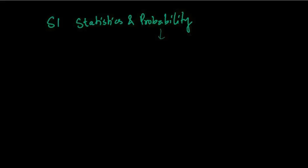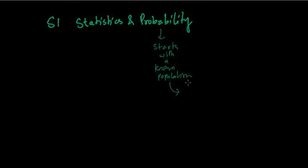Probability starts with the concept of a known population. By population, we are not referring to the human population — we are referring to the total amount of data that we have. It starts with a known population, and from that we try to find what's going to happen to a sample of that population. For example, if you know there are around 10 items and you know everything about those 10 items — you know the entire population — then from that you want to find out what is the chance of getting a small selection from it. Probability is actually trying to find something smaller from what actually exists.